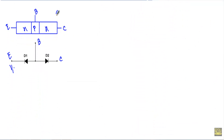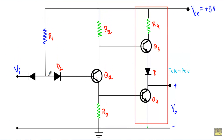This is our NPN transistor Q1. If this is the base terminal, emitter terminal, and collector terminal — between base to emitter terminal I will get a PN junction. So I can replace this PN junction with a diode D1. The base to collector junction also contains a PN junction, which I will denote with diode D2. Diodes D1 and D2 will be connected in back-to-back connection. In the diode equivalent circuit, the base terminal, collector terminal, and emitter terminal of Q1 are represented, with D1 and D2 in place.